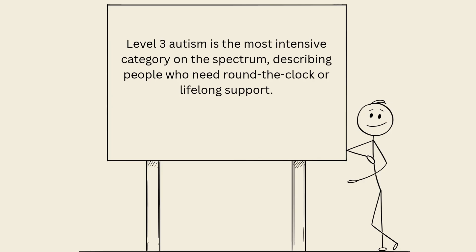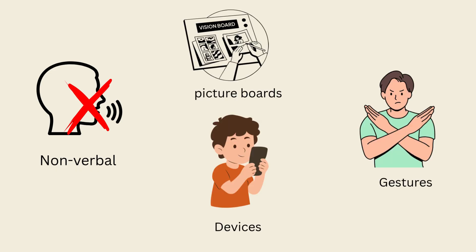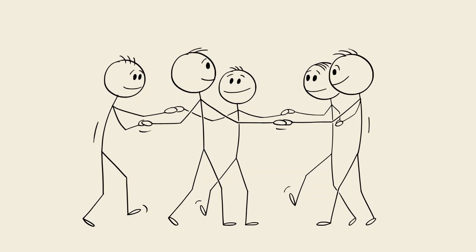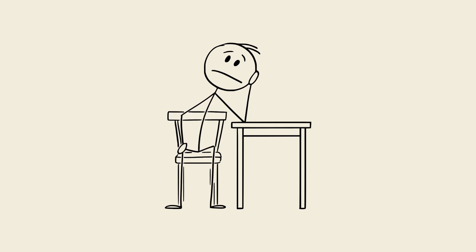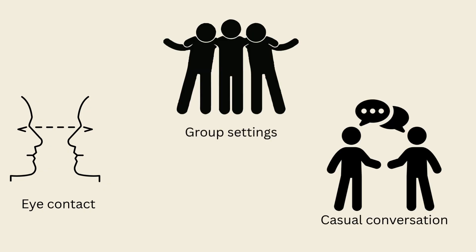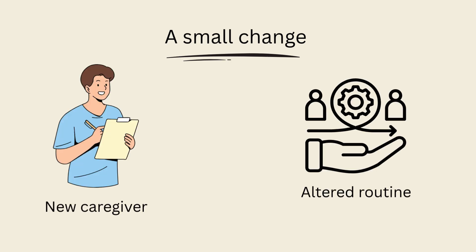Level 3 Autism is the most intensive category on the spectrum, describing people who need round-the-clock or lifelong support. Communication is often severely limited — many are non-verbal or rely on alternative systems like picture boards, gestures, or devices. Even with support, expressing needs and emotions can be very challenging. Social interaction is minimal, not because of disinterest, but because the effort to connect can be overwhelming. Eye contact, group settings, or casual conversation may feel impossible. Repetitive behaviors, rigid routines, and extreme sensory sensitivities are common, and a small change — like a new caregiver or altered routine — can cause intense distress, meltdowns, or shutdowns.